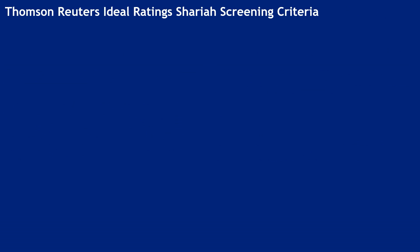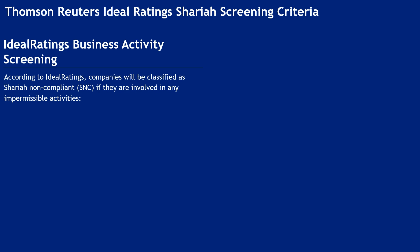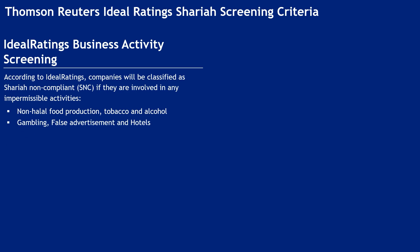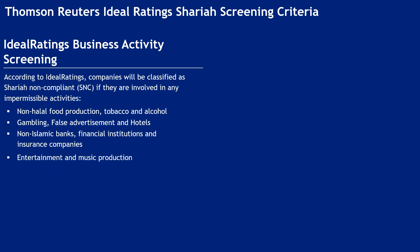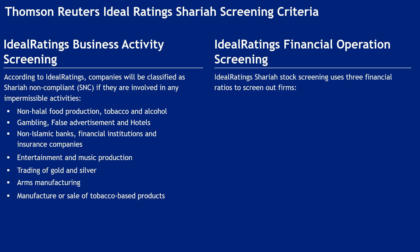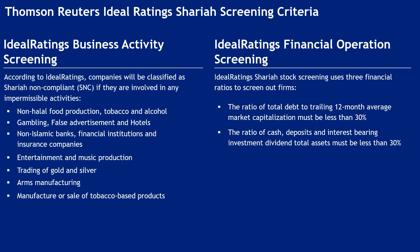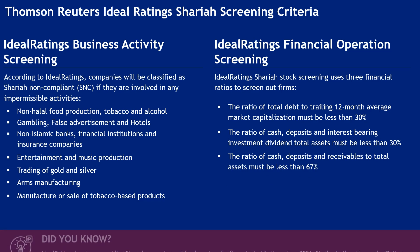Thomson Reuters Ideal Ratings Shariah Screening Criteria — Business Activity Screening. Companies will be classified as Shariah non-compliant if involved in any impermissible activities including: non-halal food production, tobacco and alcohol; gambling, false advertisement and hotels; non-Islamic banks, financial institutions and insurance companies; entertainment and music production; trading of gold and silver; arms manufacturing; and manufacture or sale of tobacco-based products. Ideal Ratings uses three financial ratios: total debt to trailing 12-month average market capitalization less than 30%; cash, deposits and interest-bearing investment to total assets less than 30%; and cash, deposits and receivables to total assets less than 67%.